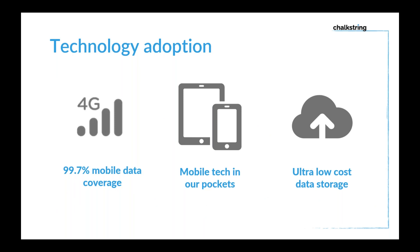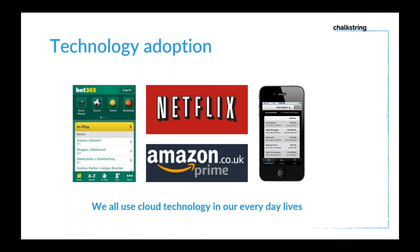In terms of technology, we're pushing almost 99-plus percent mobile data coverage across the UK population, with 5G already coming out. We've all got mobile tech in our pockets and we're comfortable with it. Data storage is incredibly cheap now. These are technologies we're all comfortable with, which underpins the CIM strategy. We all use this kind of technology every day without even thinking — whether it's Netflix, online shopping, online banking, or whatever — and this is the technology used for true CIM solutions.